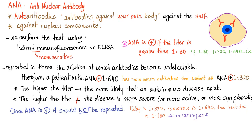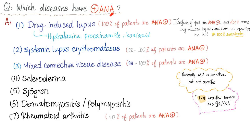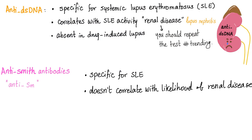ANA without the S is an autoantibody against your own nucleus. We have talked about it before in video number six, called Rheumatology Mastering the Labs. ANA without the S is not specific because it's positive in virtually every rheumatologic disease: drug-induced lupus, systemic lupus, mixed connective tissue disease, scleroderma, Sjogren's, dermatomyositis, polymyositis, rheumatoid arthritis — all can have positive ANA, making it very non-specific. Don't forget that anti-double-stranded DNA and anti-Smith are specific for lupus, and anti-double-stranded DNA correlates with lupus nephritis.